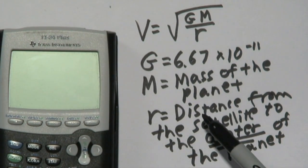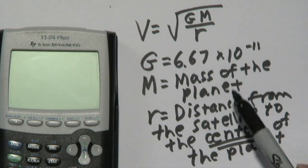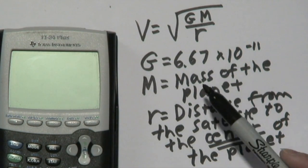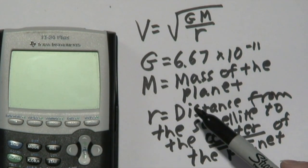But the r and the M are going to be the numbers that are going to vary from scenario to scenario, but what you want to plug in for sure that's fixed is the G, 6.67 times 10 to the negative 11.